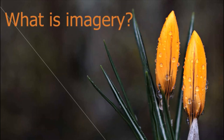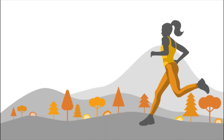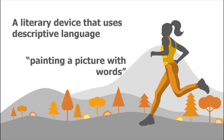So, what is imagery? Imagery is a literary device that uses descriptive language that functions as a way for readers to better imagine the world of the piece of literature. Using imagery helps the readers to better understand the imaginary world that authors create. Imagery associates with mental pictures. Most of the time, it is described as painting a picture with words. It aids readers to visualize authors' writings better.